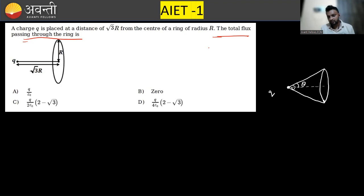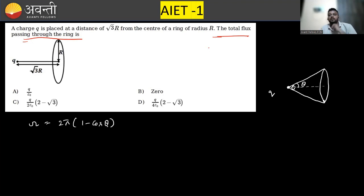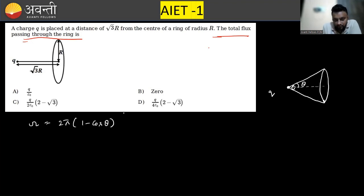The solid angle for a cone with half-angle θ is: Ω = 2π(1 − cos θ). This is a very important relation. Remember: θ is the half angle of the cone. Also remember that for any closed surface, the solid angle subtended at any interior point is 4π.